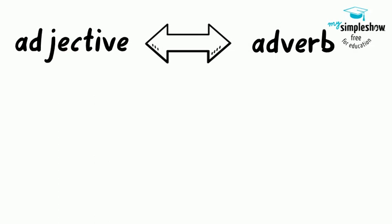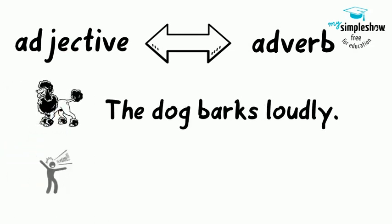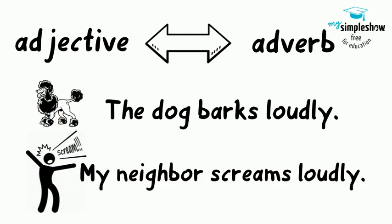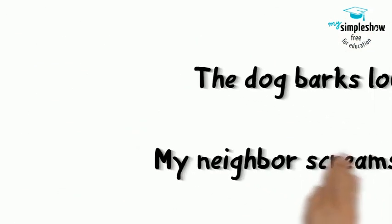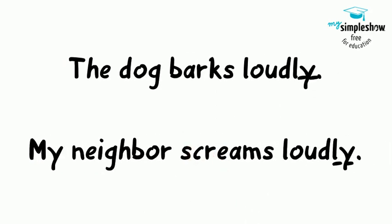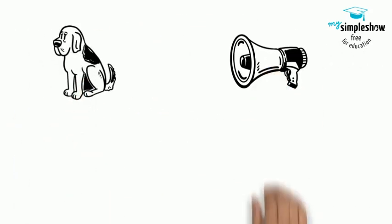Let's compare that to the adverb. My neighbor's dog barks loudly. My neighbor screams at him loudly. Now we need to add something to our adjective to make it an adverb — we add '-ly.' Why do we need an adverb now? Because we no longer describe the dog itself or my neighbor. We describe how they do something. We describe a verb. To bark is a verb. To shout is a verb. When we describe how something is done, we use an adverb.